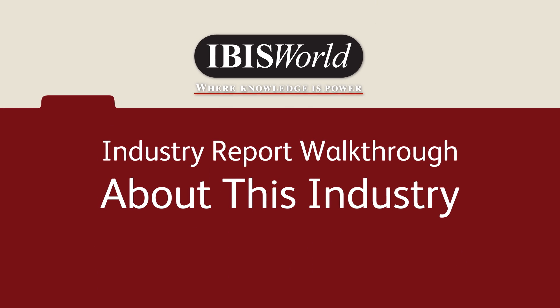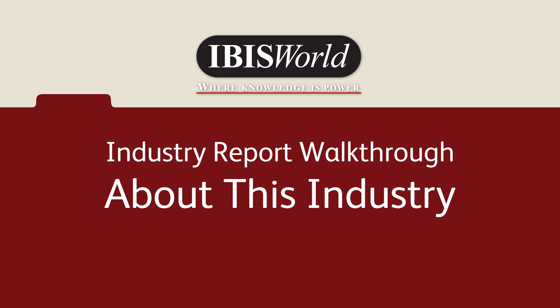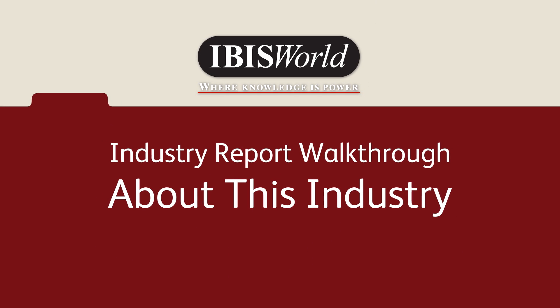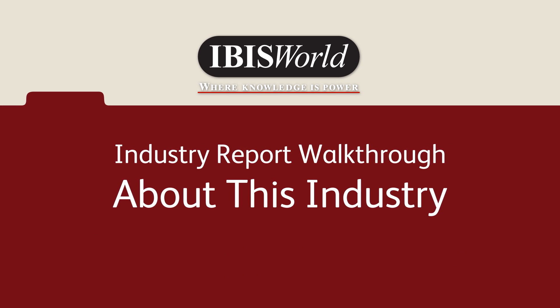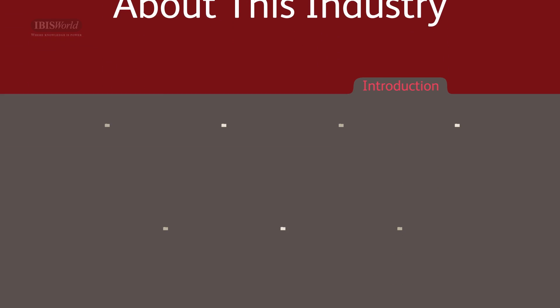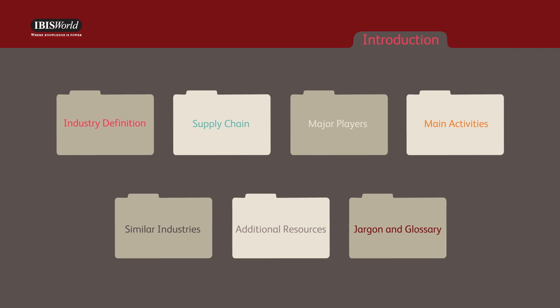The About This Industry chapter provides an outline of what the industry is and what it includes. It looks at the industry definition, supply chain, major players, main activities, similar industries, additional resources, and jargon and glossary.